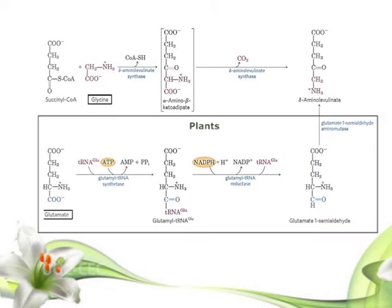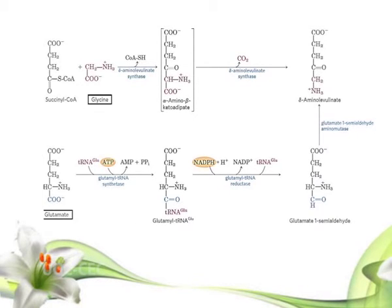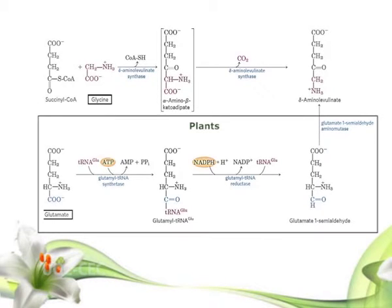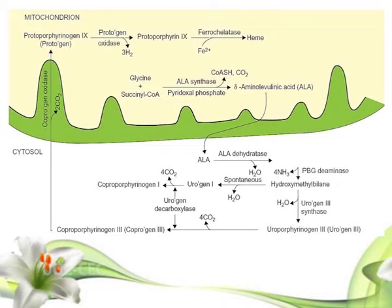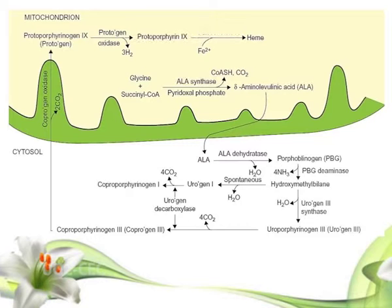In plants, algae, bacteria other than the proteobacteria group, and archaea, ALA is produced from glutamic acid via glutamyl-tRNA and glutamate-1-semialdehyde. The enzymes involved are glutamyl-tRNA synthase, glutamyl-tRNA reductase, and glutamate-1-semialdehyde 2,1-aminomutase. In all organisms, two molecules of ALA condense to form porphobilinogen, and through a series of complex enzymatic reactions, four molecules of porphobilinogen come together to form protoporphyrin. The iron atom is incorporated after protoporphyrin has been assembled, in a step catalyzed by ferrochelatase.